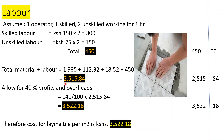Total materials plus plant plus labor: 1,935 + 112.32 + 18.52 + 450 = 2,515.82. Allowing for 40% profits and overheads gives 3,522.18. Therefore, the cost of laying tiles per square meter is 3,522.18. This is the cost to lay tiles on a floor of 1 m². Thank you guys for your time — until next time!